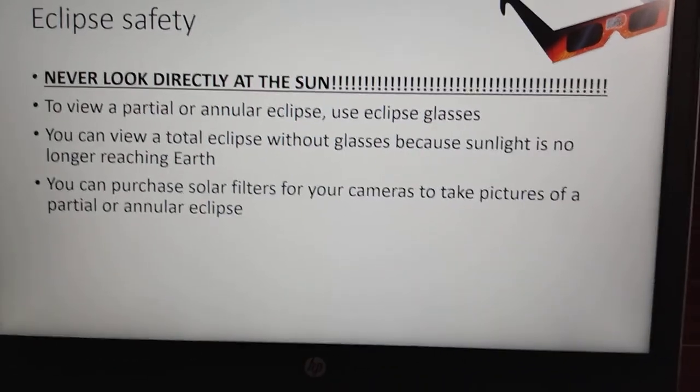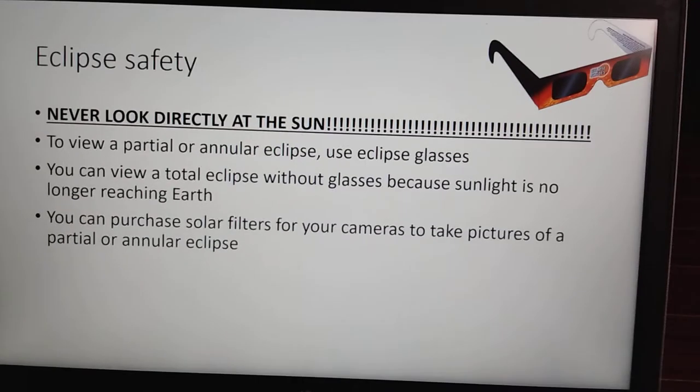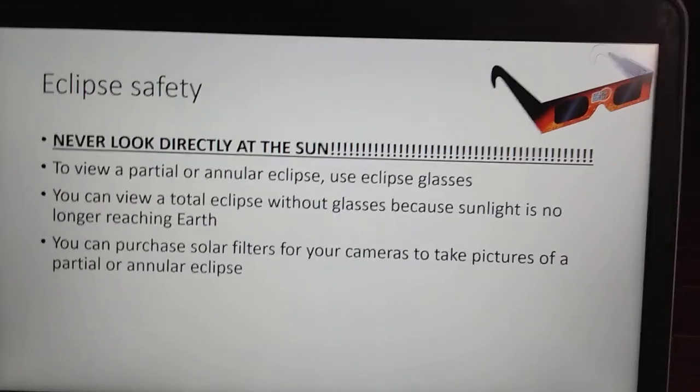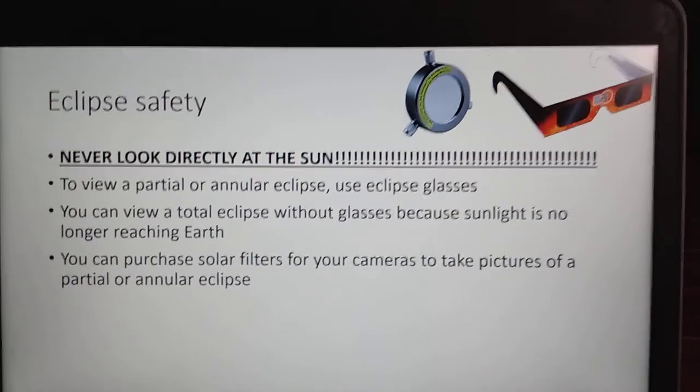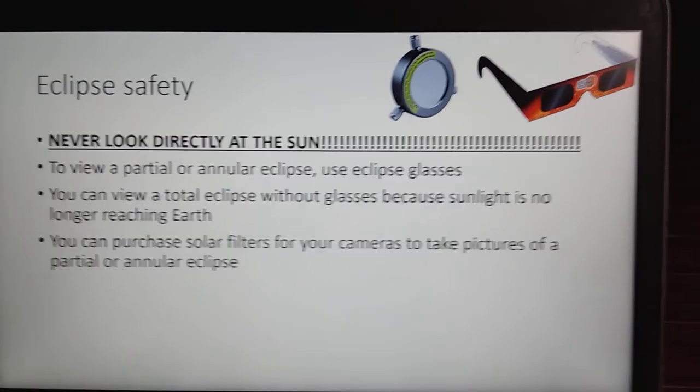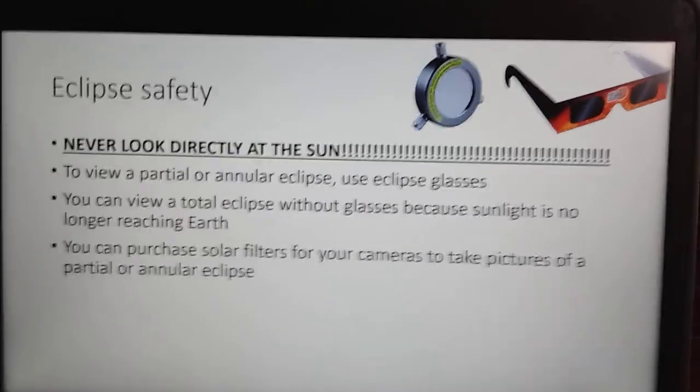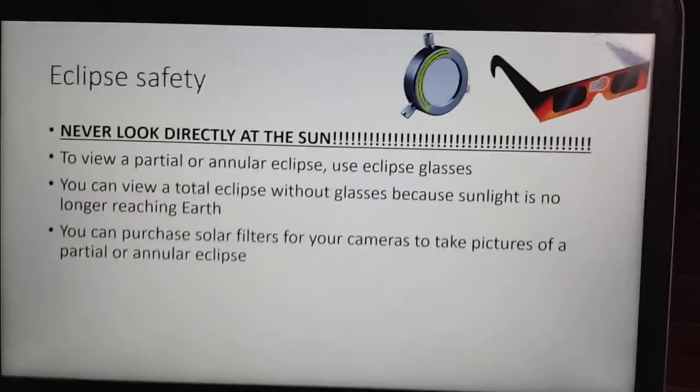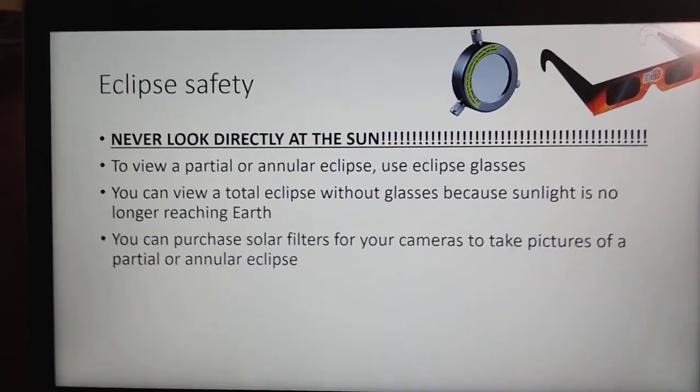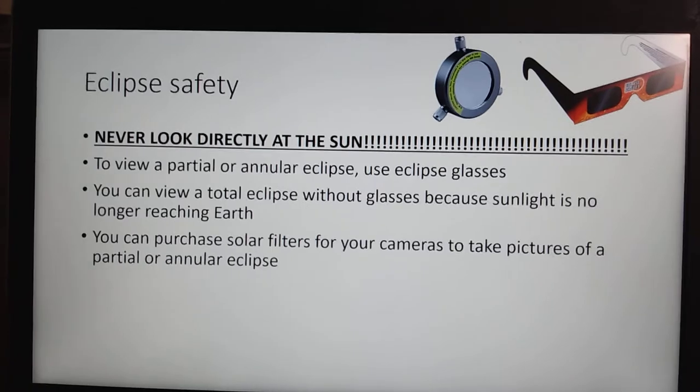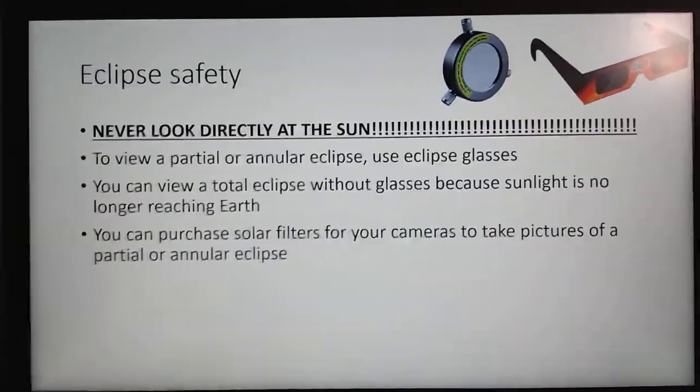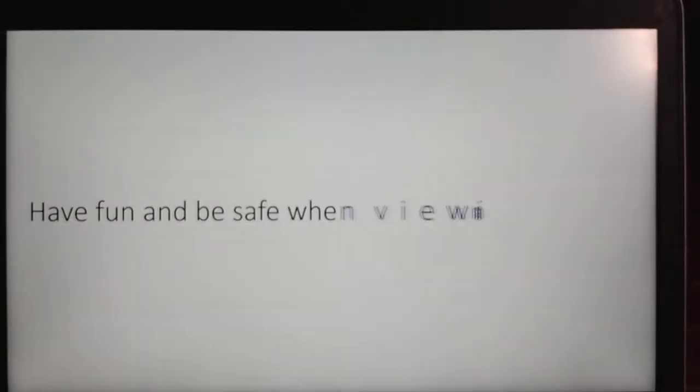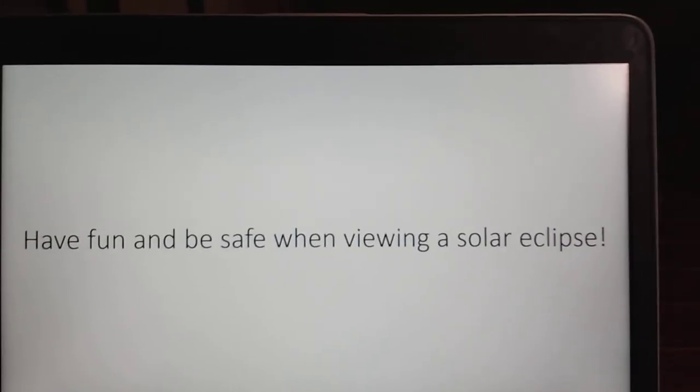You can purchase solar filters for your cameras to take pictures of a partial or annular eclipse. There's one in the upper right-hand corner of your screen. They function like eclipse glasses in the sense that they let you only see the sun. And with that being said, have fun and be safe when viewing a solar eclipse.